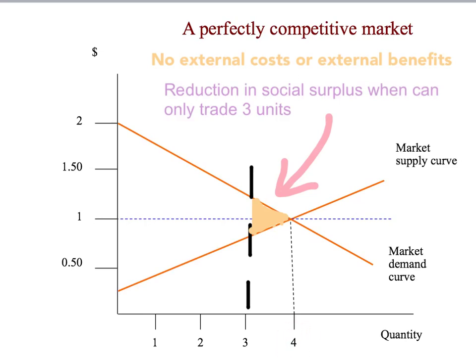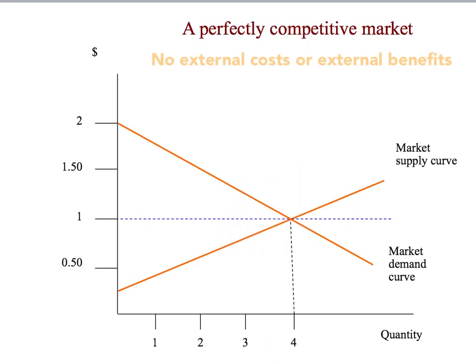Notice that we get this loss for any quantity less than four units — whether you choose one unit, two units, three units, or three and a half units. Any quantity below four units means buyers and sellers are trading less than the competitive equilibrium, and you will always get a loss of social surplus. Any reduction in trade below four units reduces social surplus.